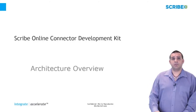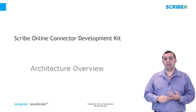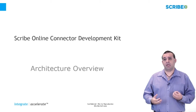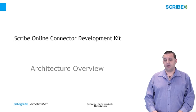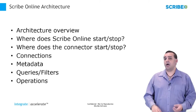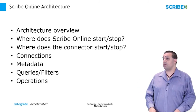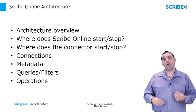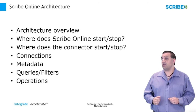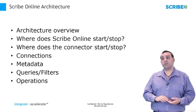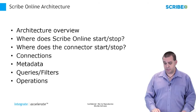Now we're going to talk about Scribe connector architecture — the architecture of Scribe Online, the platform versus Scribe Online connectors, and the agents that use those connectors. We're going to show an architecture overview, look visually at what Scribe Online looks like, talk about where the platform starts and stops, where your connector starts and stops, how connectors make connections, and the metadata queries, filters, and operations that connectors need to support.